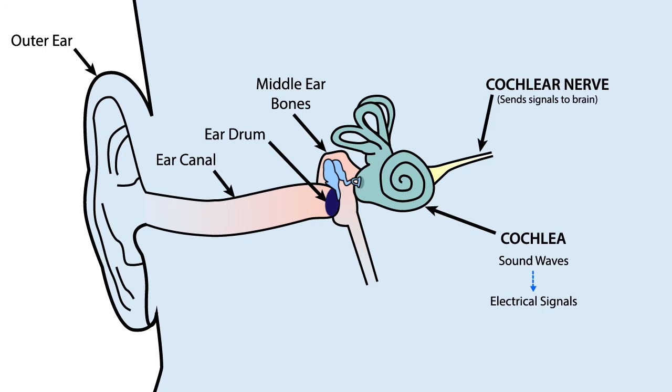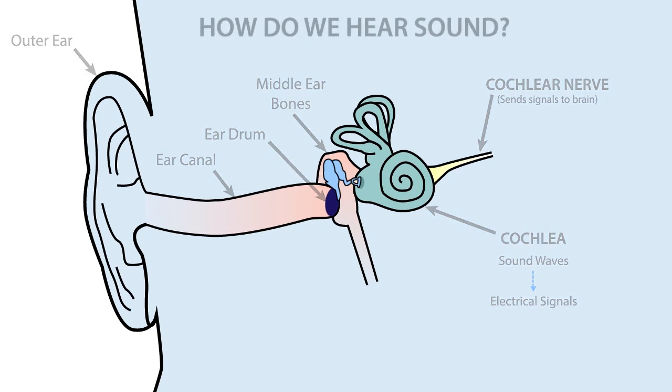And now that we know our basic ear anatomy, we can learn how we hear sound. Sound waves, which are pressure waves of air molecules, enter the ear.